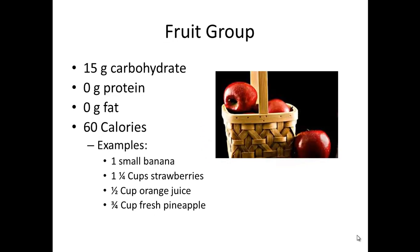The fruit group has 15 grams of carbs per serving, no protein, no fat, and 60 calories. Examples include a small banana or half of a large banana, one and a quarter cups of strawberries, half a cup of orange juice, or three-quarter cup of fresh pineapple. Serving size really dictates the total calories, so you have to pay attention to that.